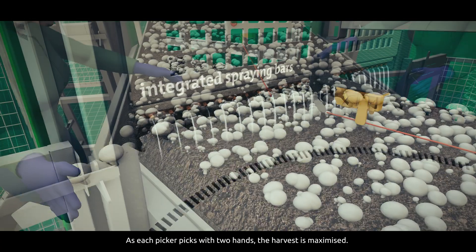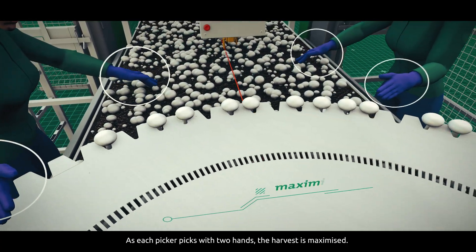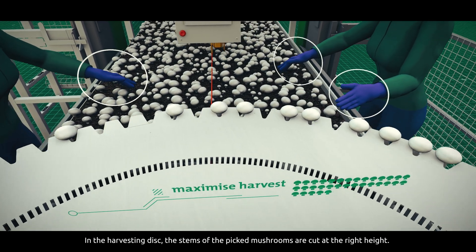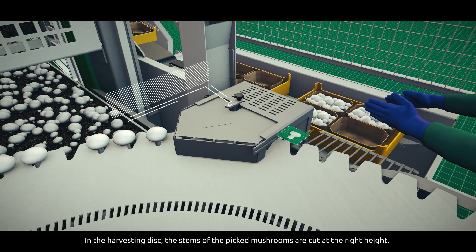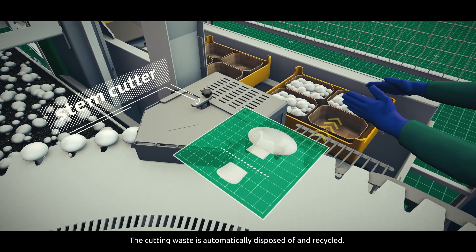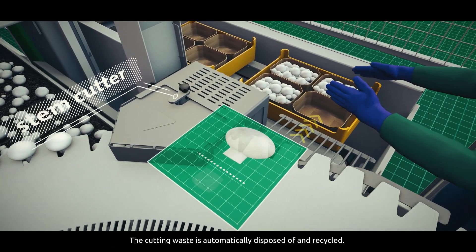As each picker picks with two hands, the harvest is maximized. In the harvesting disk, the stems of the picked mushrooms are cut to the right height. The cutting waste is automatically disposed of and recycled.